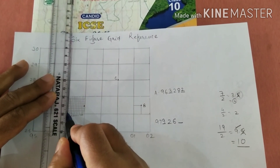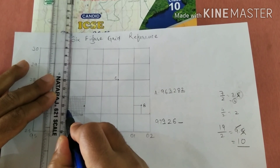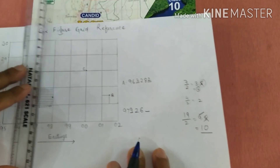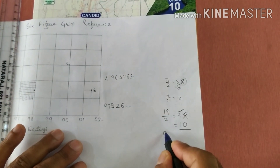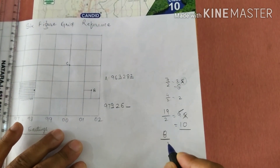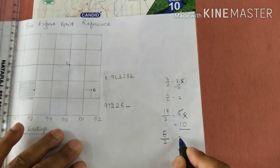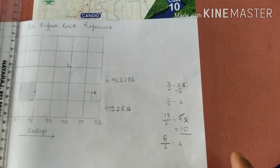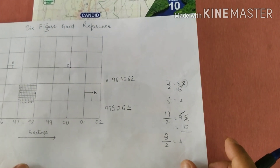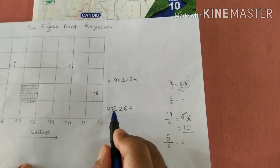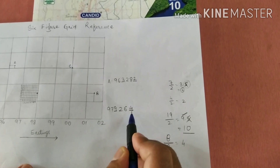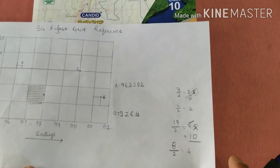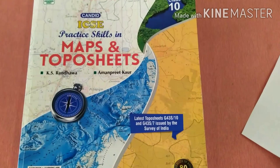Now for the northing: one, two, three, four, five, six, seven, eight — it is coming eight. Eight divided by two will be four. So the six-figure grid reference will be 9 7 9 2 6 4.